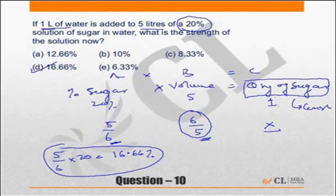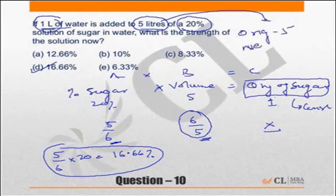How does the volume become 6 by 5 times? Originally there were 5 liters of the mixture. You're adding 1 liter of water, so 5 plus 1 becomes 6.